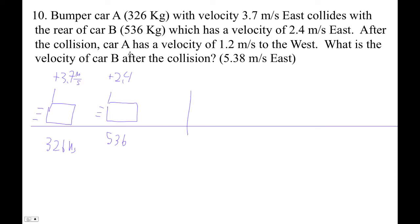And then afterwards, car A is going to the west. So car A bounces off. This is A, this is B. A bounces off and it's going backwards at 1.2 meters per second, so that'll be negative 1.2 meters per second. Still 326 kilograms. And then B will probably be trundling along pretty fast, and we don't know that. So this is A, this is B.